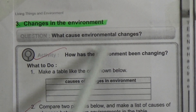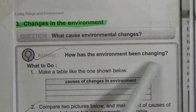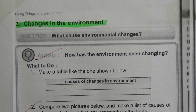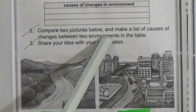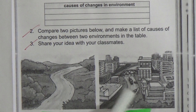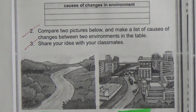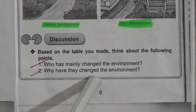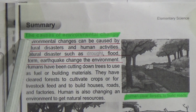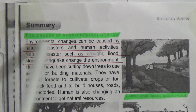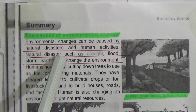Next topic: Changes in the Environment. Question: What causes environmental changes? Activity: How has the environment been changing? Make a table comparing two pictures — before development and after development — listing causes of changes. Summary: Environmental changes can be caused by natural disasters and human activities. Underline this line.